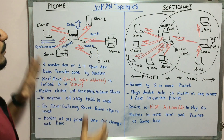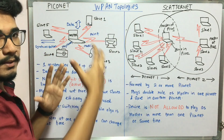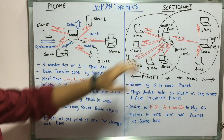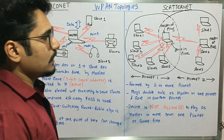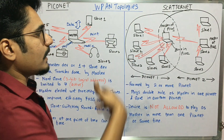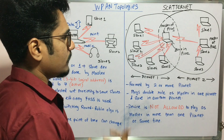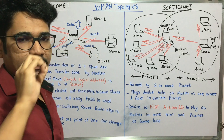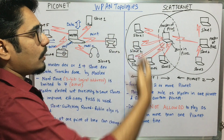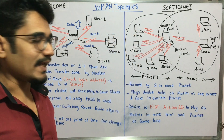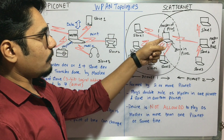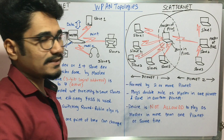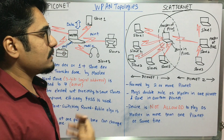Now let's move on to the Scatternet. If you collaborate multiple Piconets, that forms a Scatternet. In this, there is one centralized slave device that can act as both master as well as slave — that is the peculiarity of this topology. It is formed by two or more Piconets, and one device can play a dual role: as a master at one point of time and as a slave at another point of time.